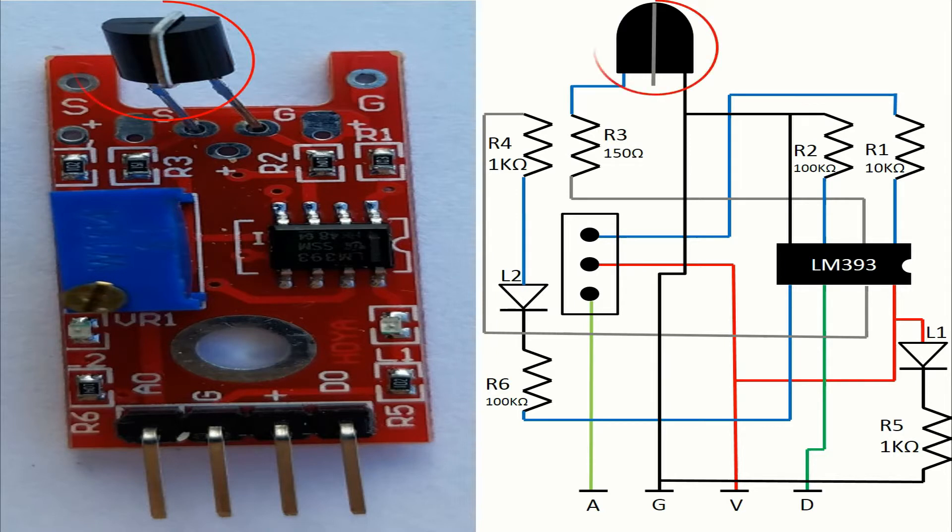There we have the sensor itself, and of course, six resistors and two LEDs. On the right you can see how the pins of the module are connected on this board. We have in black the flow of the ground, in red the flow of the voltage, and in light green the flow of the analog signal.